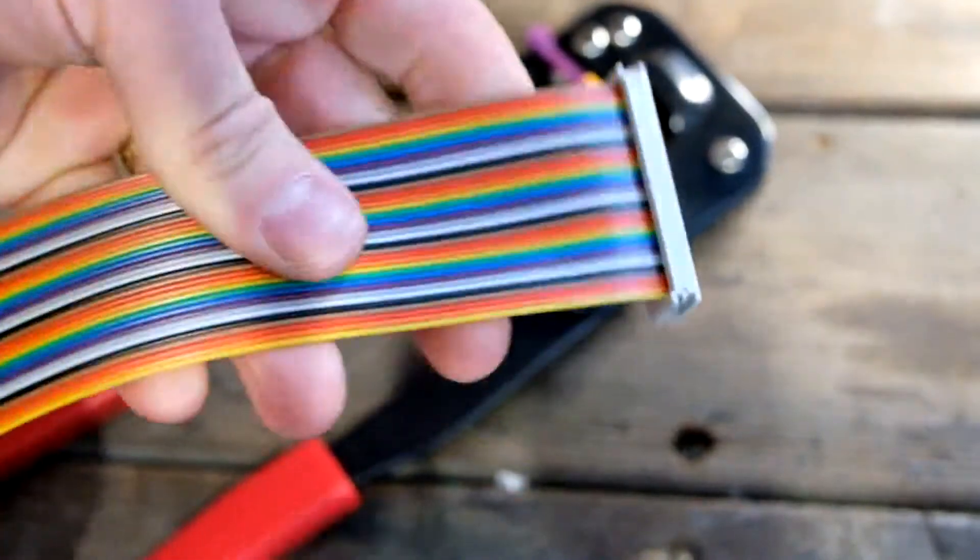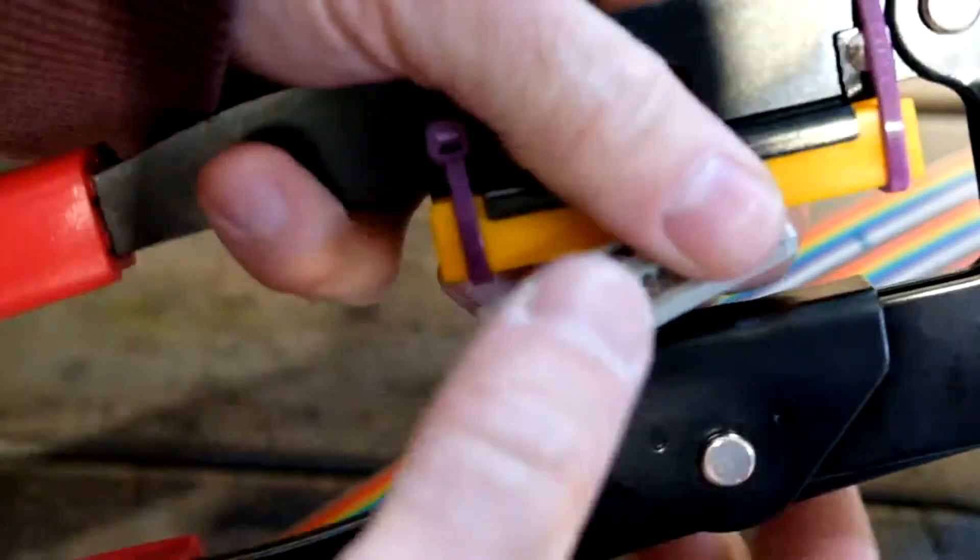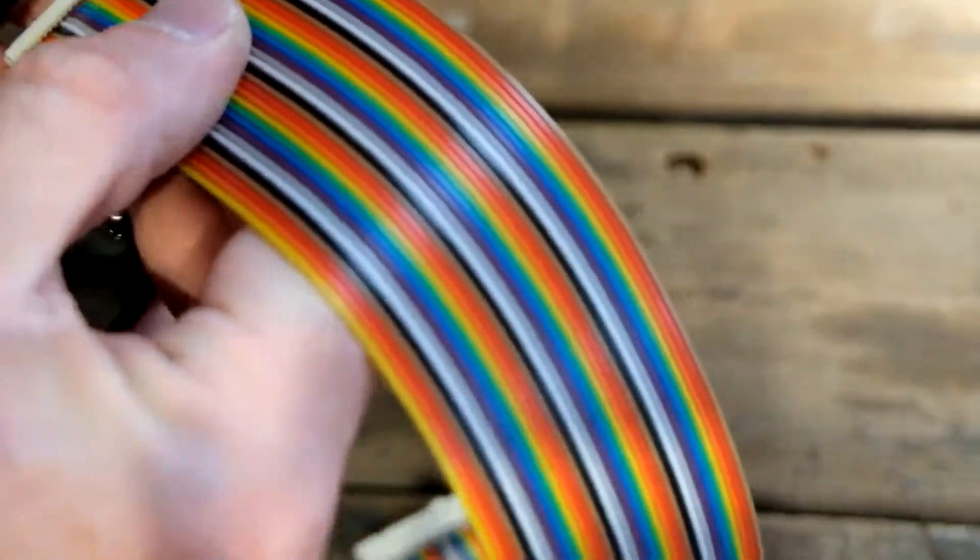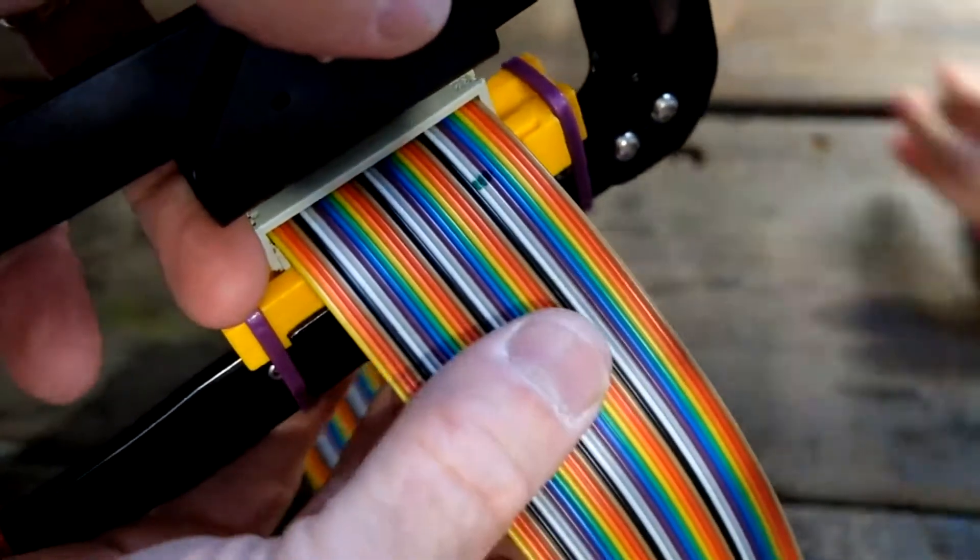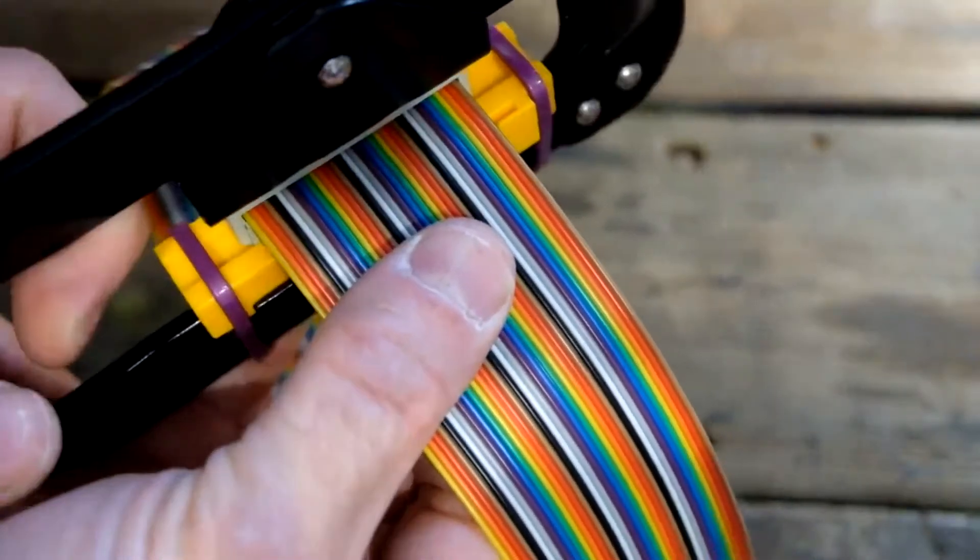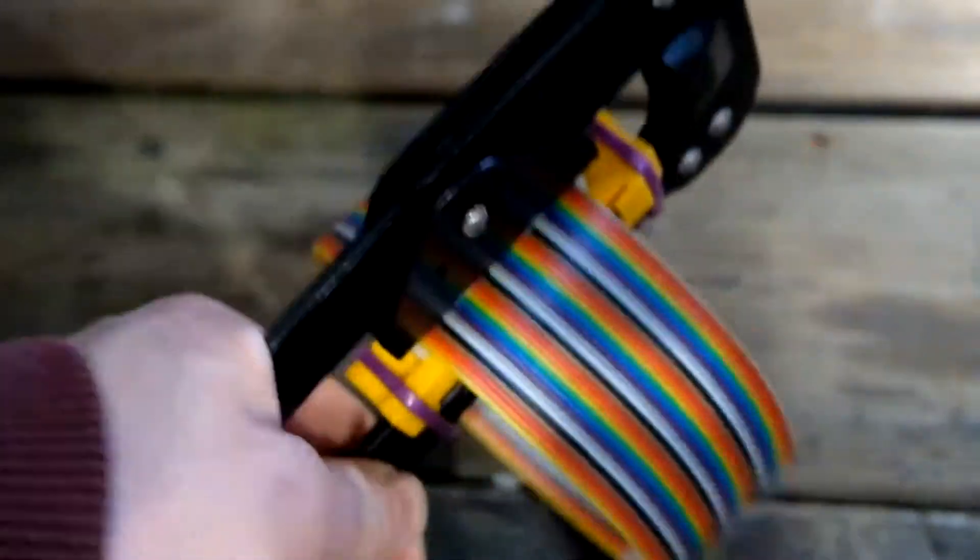Done. Pull it out. And that's the crimp. Super easy, right? And we just get the next one. Feed it in the same way. Push the ribbon through. I've marked on the ribbon where it's supposed to go, so make it nice and easy for me. Press down, make sure it's square. Crimp. That's another one done.